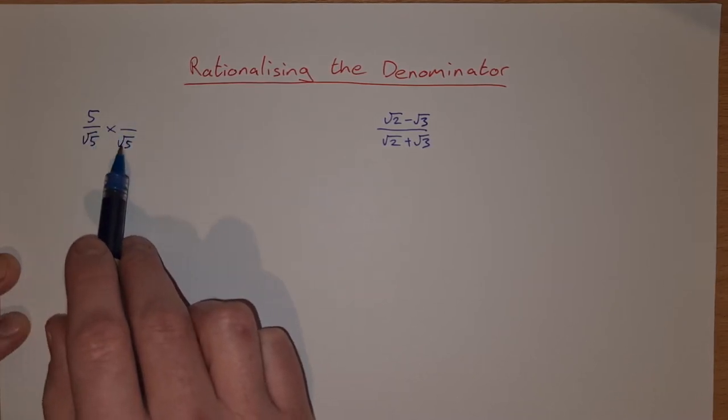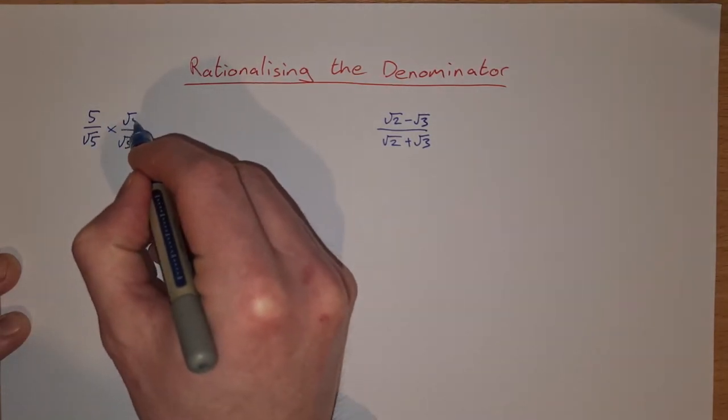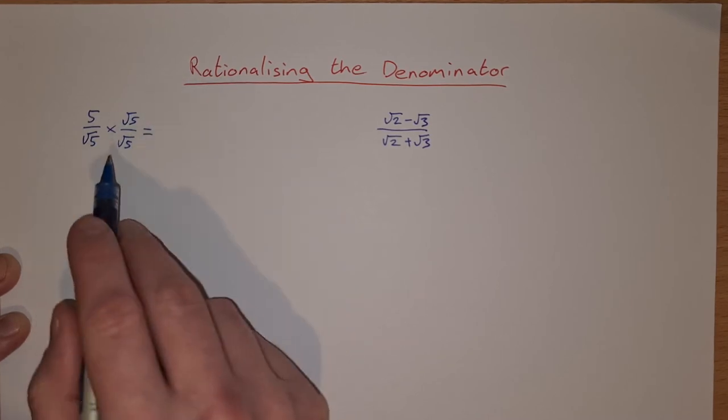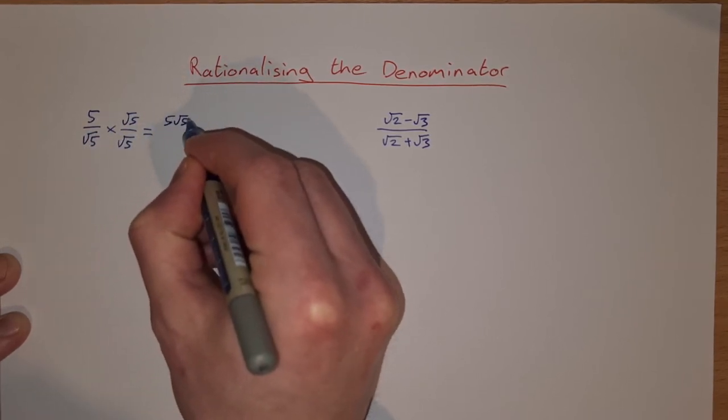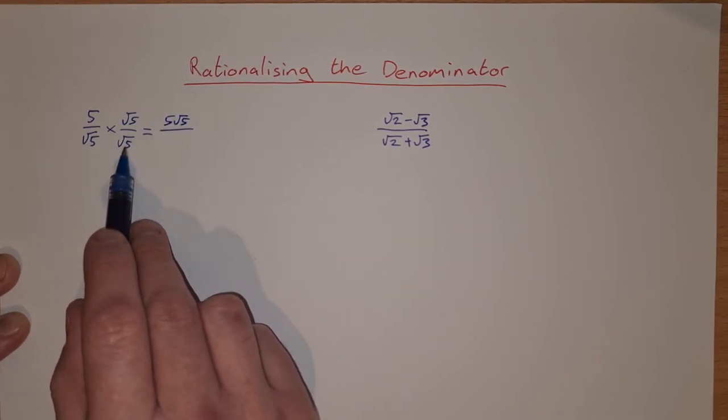If I multiply the denominator of a fraction by the square root of 5, to keep things balanced I need to multiply the top by square root of 5 as well. So on the top line then I'll get 5 by root 5 is 5 root 5, and on the bottom I get root 5 by root 5, which is just 5.